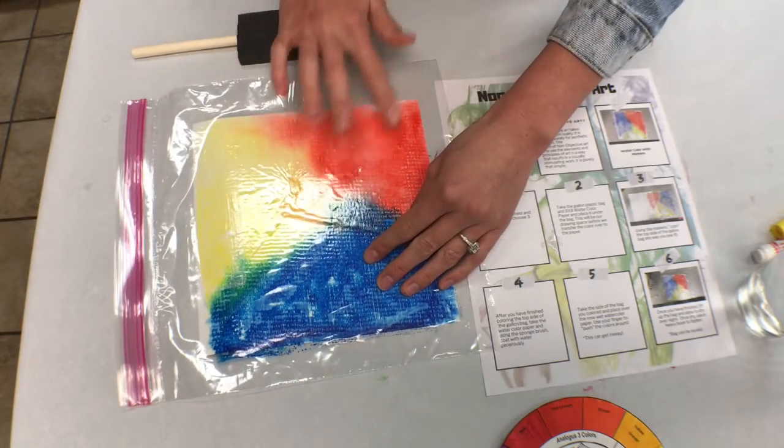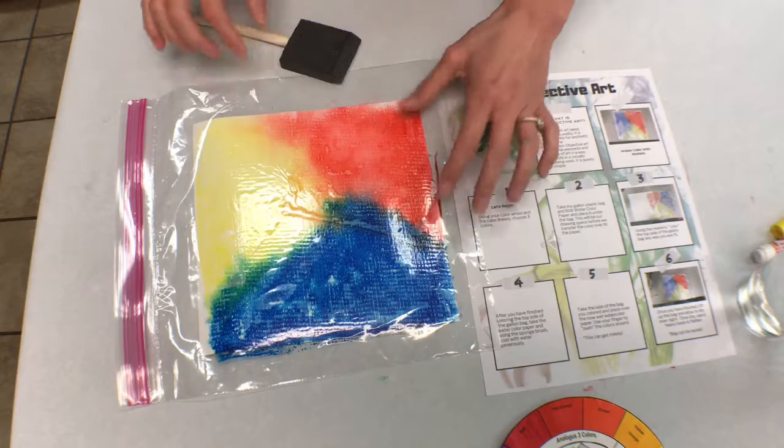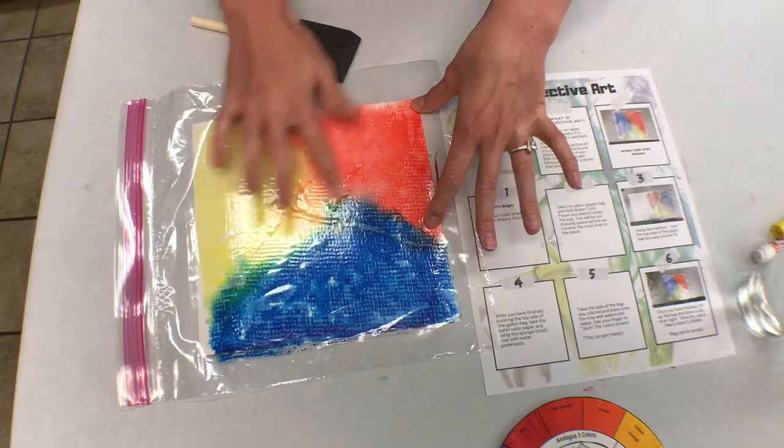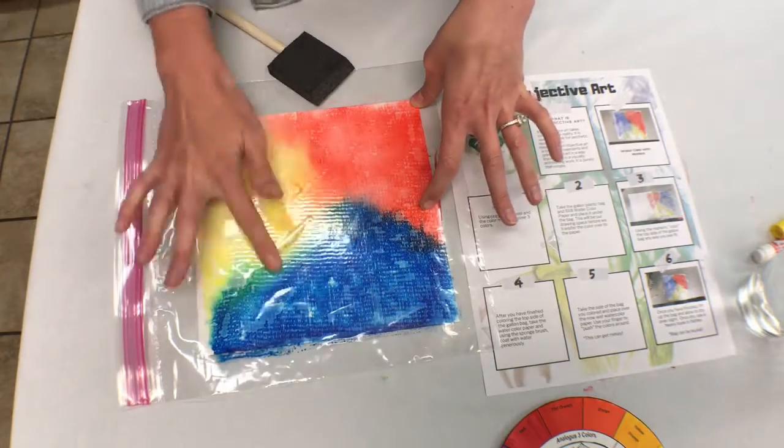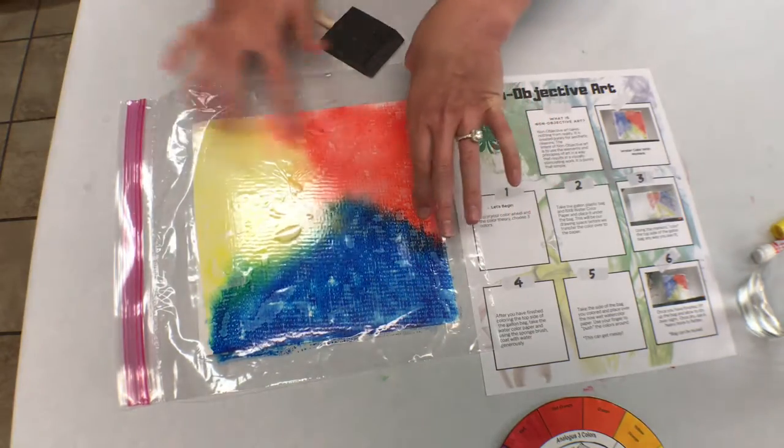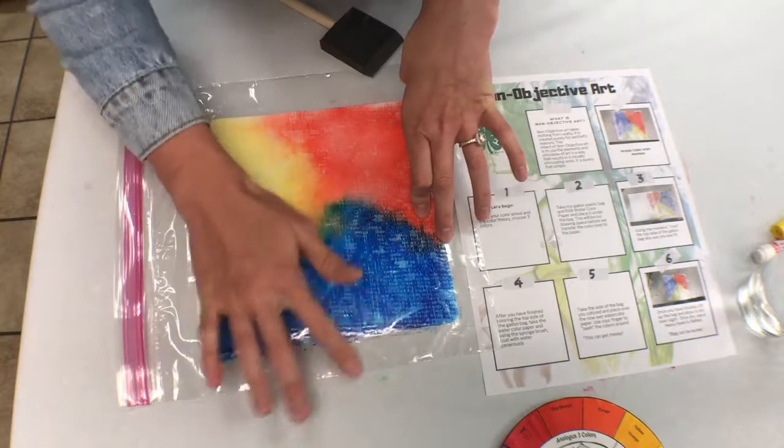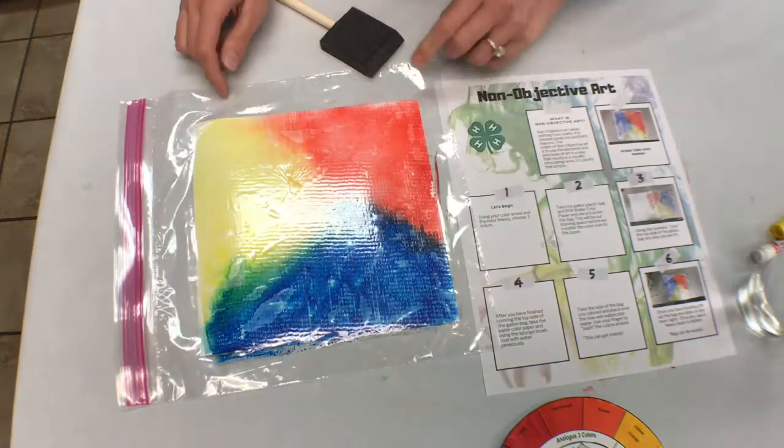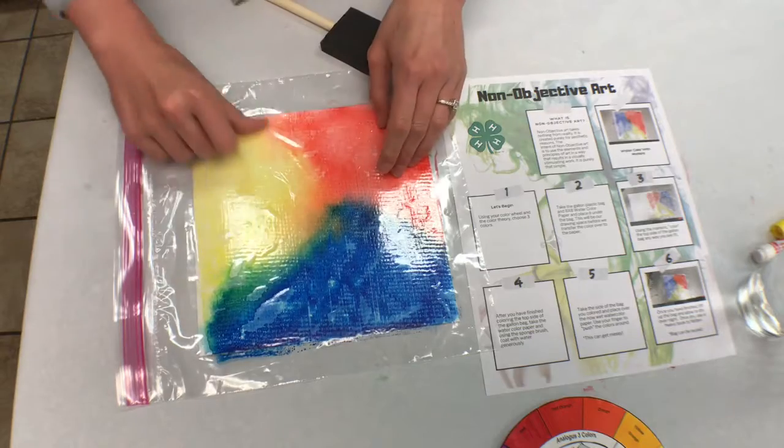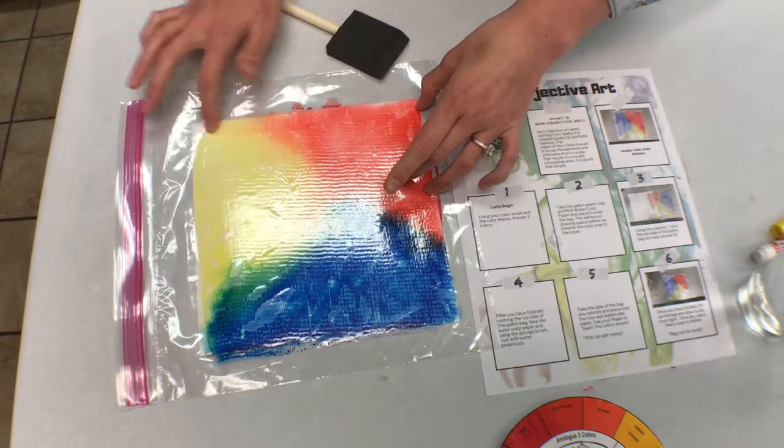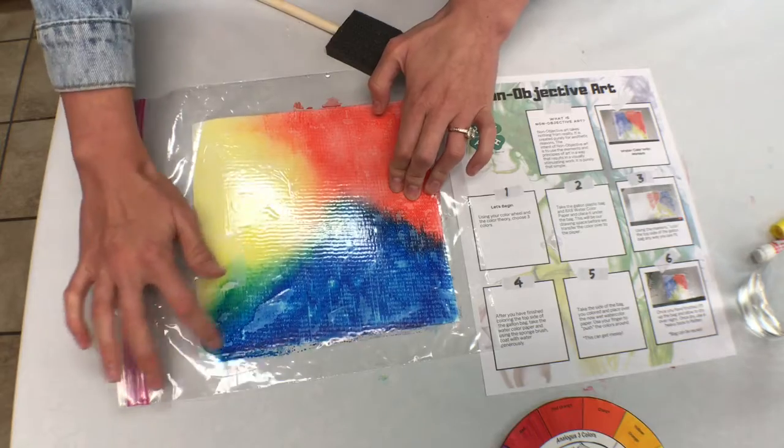You can use your fingers, or you could use the other side of the brush if you don't want to use your fingers. And then what you'll notice if you use primary colors is that you'll start to notice those intermediate colors on the edges. Those secondary colors will start to form because you started with those primary colors as a base.